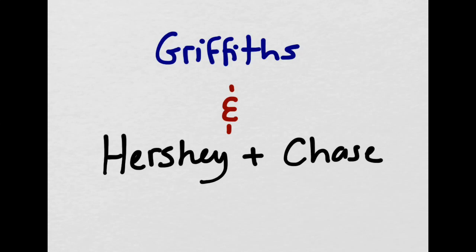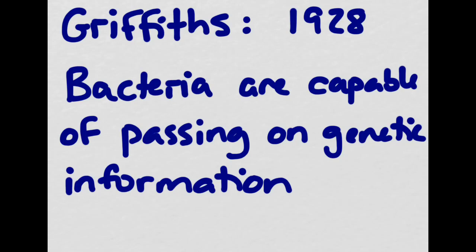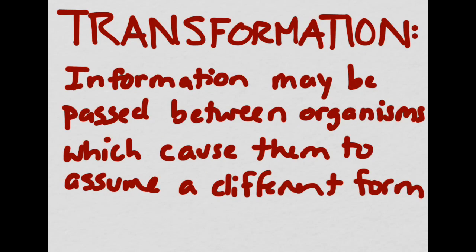Both of these experiments were very important in discovering exactly how genetic material can be passed on from parent to offspring. Griffith's experiment happened first, in 1928, and so we're going to discuss that one first. Griffith's experiment proved that bacteria are capable of passing on genetic information. Bacteria are capable of undergoing something called transformation. He thought that information might be passed between organisms, which might cause them to assume a different form.